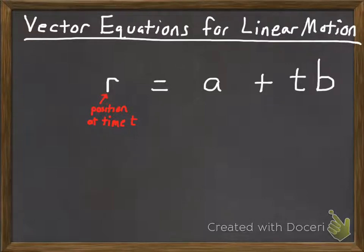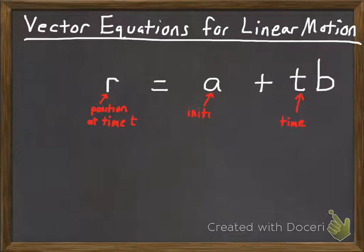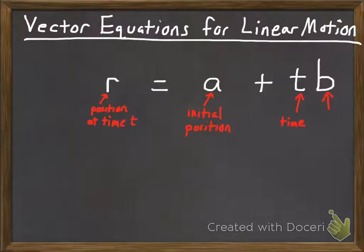The parameter t — which just needs to be the scalar multiple — represents time in whatever units the problem uses. The value a, just as in the normal vector equation of a line, represents the initial position of the object. And b is a vector representing the velocity vector for the object.